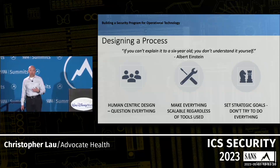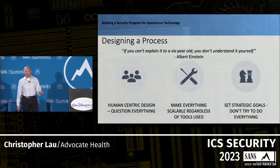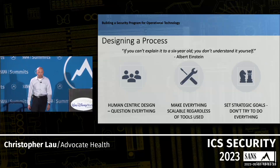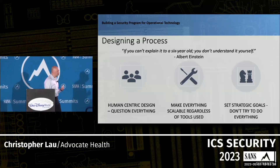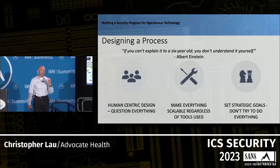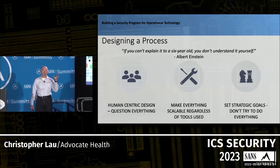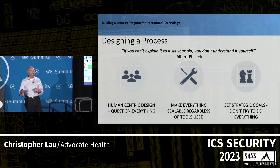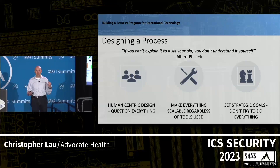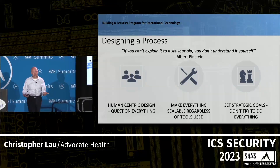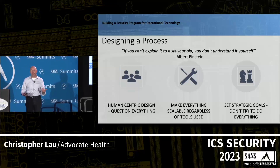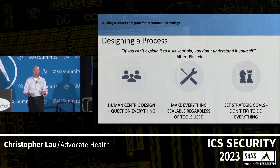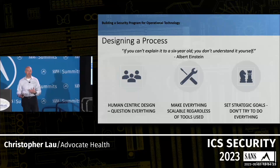I was very transparent with our executive team when making this business case: as we started to kick over rocks, implement technology, get reports, and conduct analysis, we could not unring the bell. Once we knew where there were problems, we had to do something about them — otherwise, in the event of an incident, we would become both victim and accomplice because we knew something and didn't act. As we designed the process, making it scalable, we also didn't know what other components beyond IOMT and OT would be hanging on there. Set strategic goals, don't try to do everything at once.